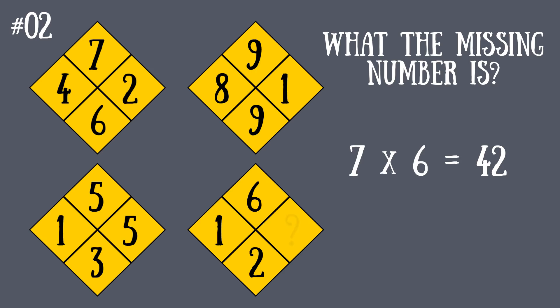So in the last one, 6 multiplied by 2 is 12. We already have number 1 on the left, which means the correct answer is 2. And I don't think I've said 'rhombuses' so many times since about the eighth grade.